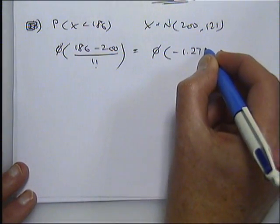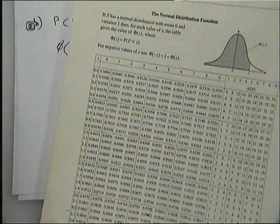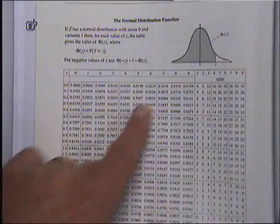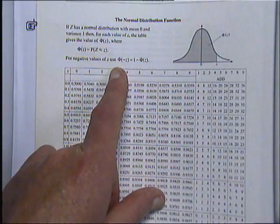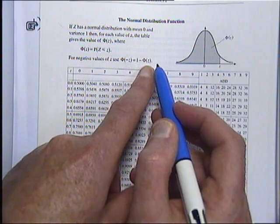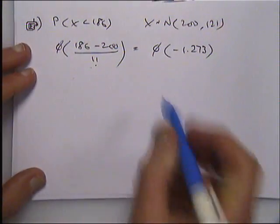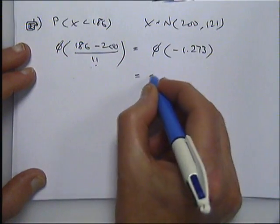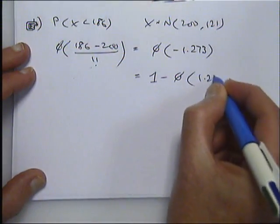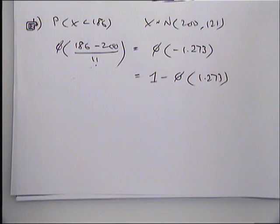Now if you look in the tables, the first column doesn't have any negative numbers, but it does tell you in the textbook and in the formula book what to do. It says phi of a negative is equal to one minus phi of the positive, and it's purely to do with the symmetry of the curve. So if you have phi of a negative, you just do one minus phi of the positive.